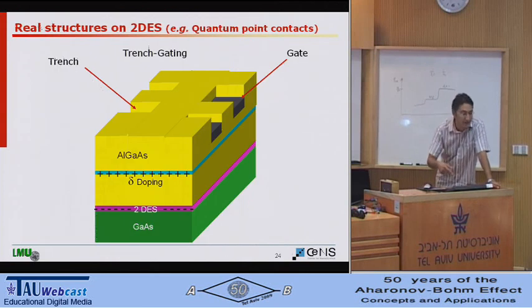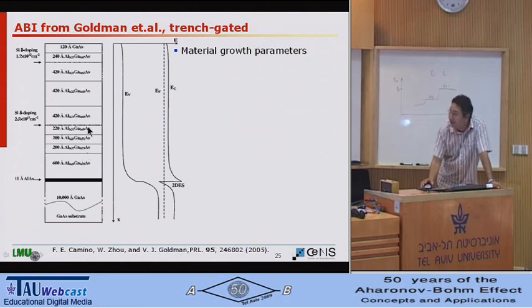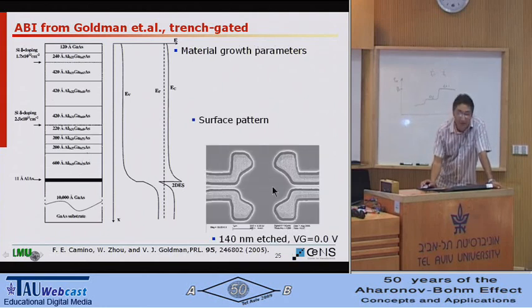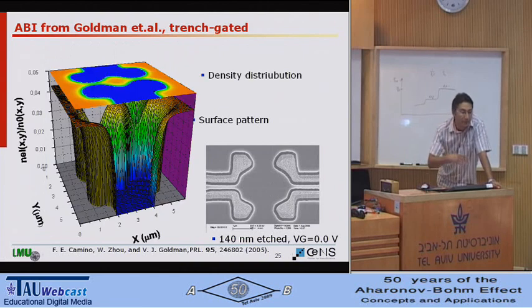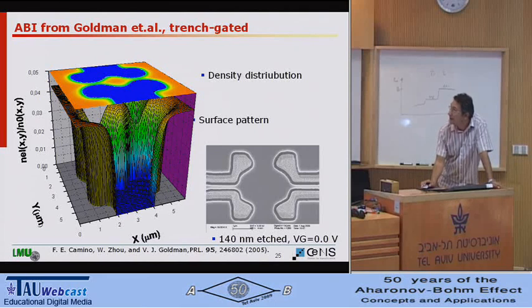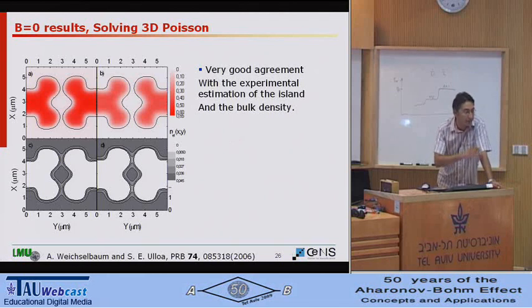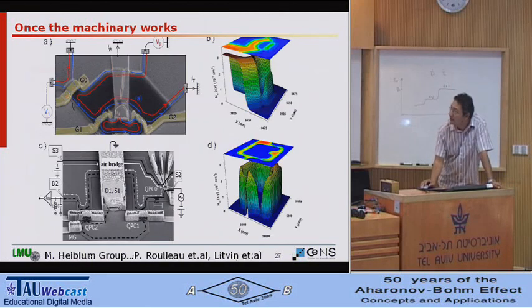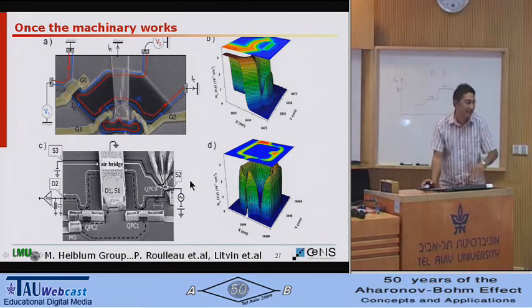So there is another way to do this. Etching and gating, which is trench gate. And this is the real case from Camino's group. Then you start with growth parameters, numerics. Then you get the surface pattern. Then I give you back the density distribution. And then you compare with the experimental results without magnetic field. And what we see is that the estimation of the electron density with our calculations is almost perfect. Then if you have the machinery, then you can do it for all the Mach-Zehnders or whatever, and then obtain.